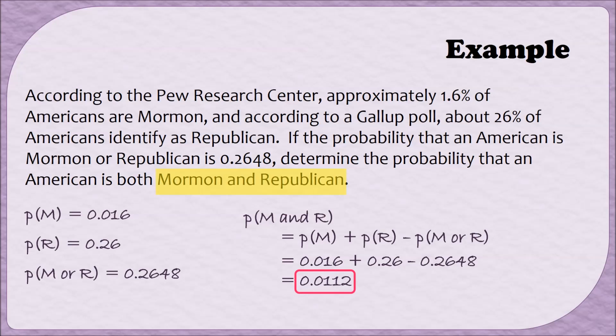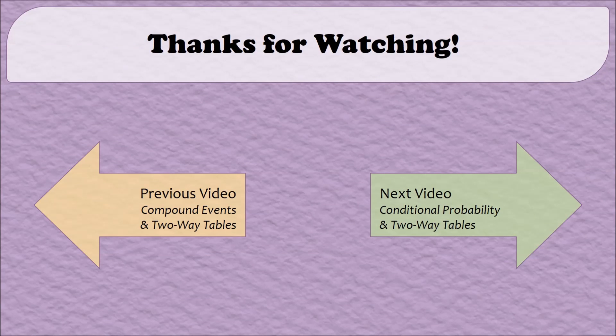And there we go, the probability that an American is both Mormon and Republican is 0.0112, or about 1.12% of the population.